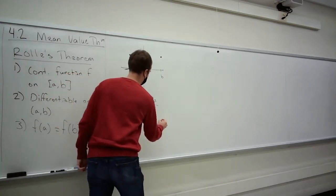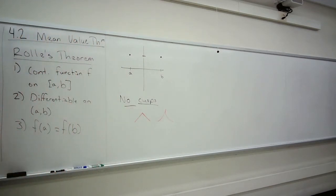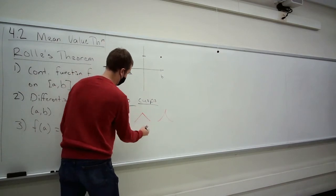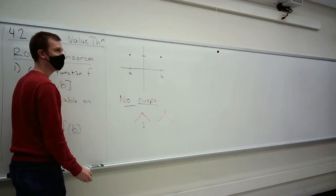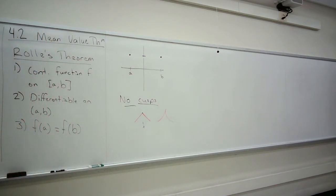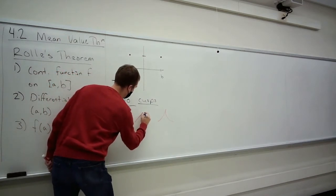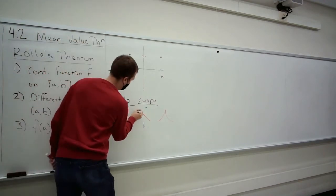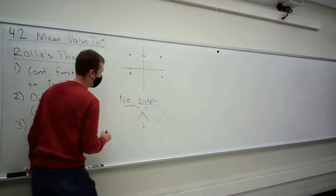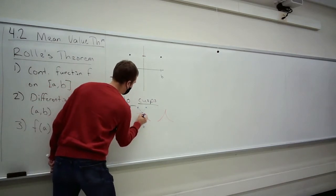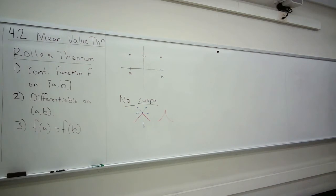Sometimes cusps look a little different. The reason we can't have cusps is this: a differentiable function cannot have cusps, because if I ask you what is the derivative at some x value, you have to be able to give me a single number representing the slope at that point. A cusp does not have a derivative value — it has many derivative values. So no cusps.